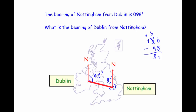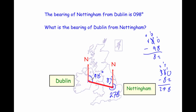To get the bearing of Dublin from Nottingham, we need the full clockwise angle from north. The 82 degrees and the angle we want to find meet at a point, so they add up to 360 degrees. Doing 360 minus 82 gives us 278 degrees. So the back bearing — the bearing of Dublin from Nottingham — is 278 degrees.